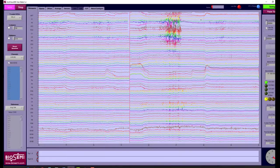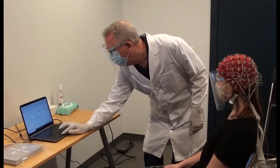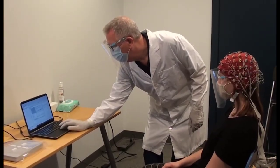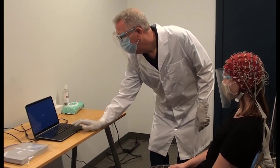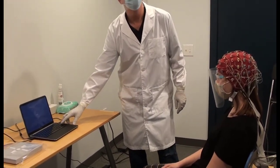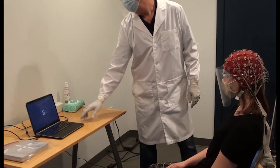After the EEG recording has started, if you're doing an EP or ERP experiment, you will need to set up and start the stimulus. Often, written instructions are presented to the subject at the beginning of the experiment. Otherwise, provide verbal instructions.